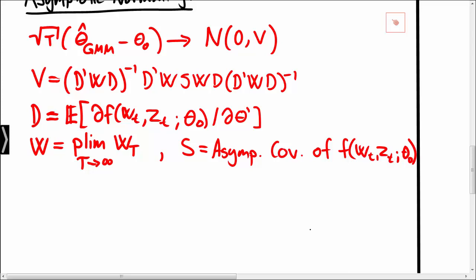At this stage an interesting question to ask is: what is actually the smallest possible variance that the GMM estimator can take, and can we select a weight matrix such that the GMM estimator attains this smallest possible variance?